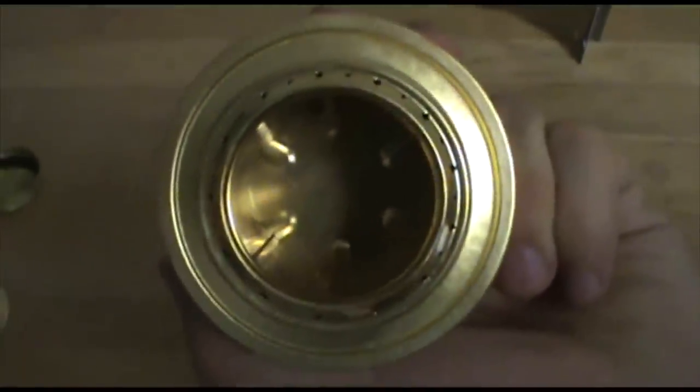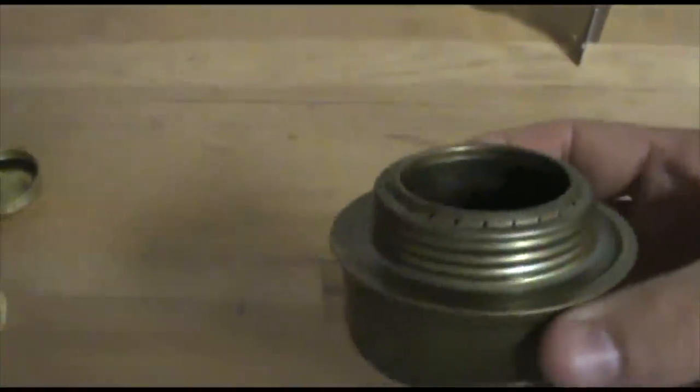The Esbit burner has 26 jets going around the outside, 24 on the Trangia, if that matters to you.